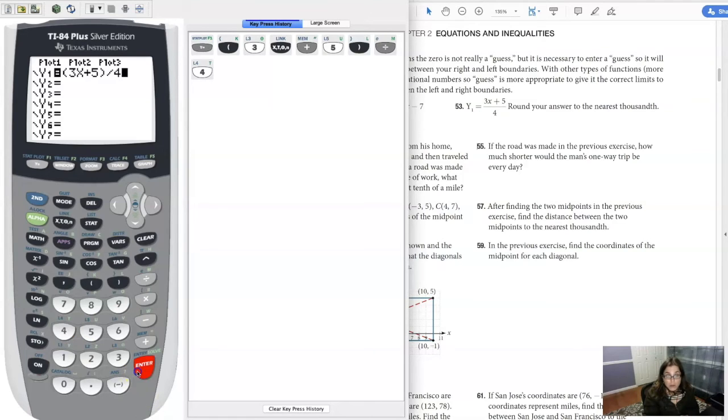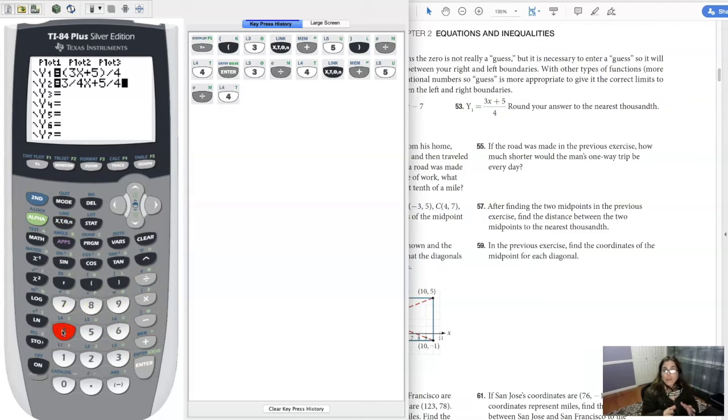You also, if you wanted to do it this way, you could have written 3/4 x plus 5/4. So either way you write it, those are equivalent statements. But I probably, just because I'm a little on the lazy side, would probably write it the first way, just because it's fewer things to type in. So I'm going to clear this one out, but just know you can write it that way.